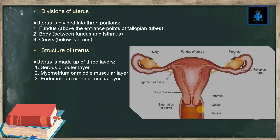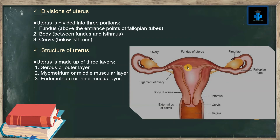The uterus is divided into three portions. First is the fundus, which can be located above the entrance points of the fallopian tubes. Above those entrance points, we can appreciate the fundus of the uterus. The second division is the body, which comes between the fundus and the isthmus — the constriction found almost in the middle part of the uterus.